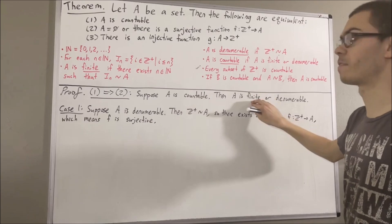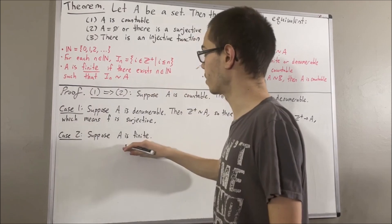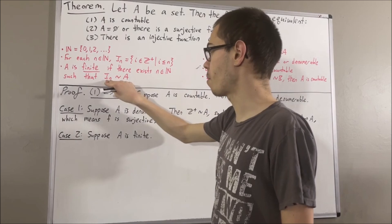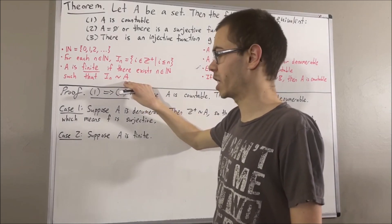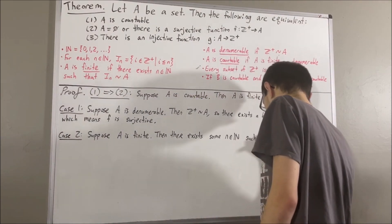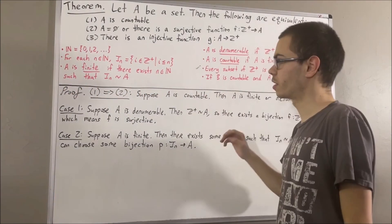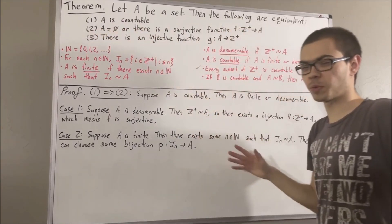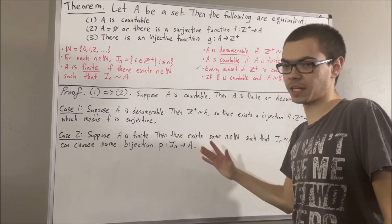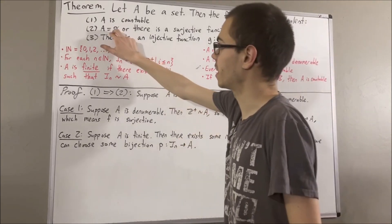Now let's consider the case where A is finite. This means that there exists a natural number N such that there exists a bijection from Iₙ to A, and I'm going to call that bijection P. To show that 2 is true, we're further going to split this into two more cases: either A is equal to the empty set, or A is not equal to the empty set. If A is equal to the empty set, then we immediately see that 2 is true.